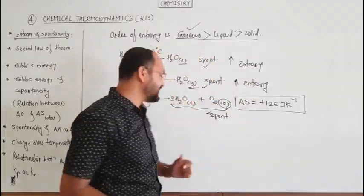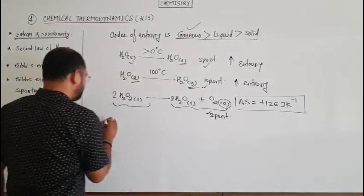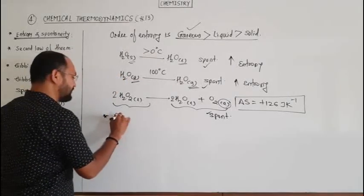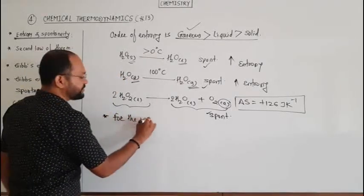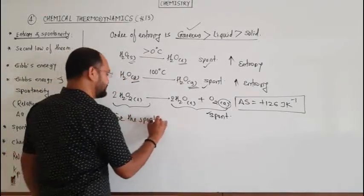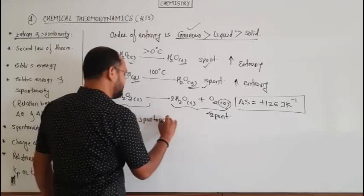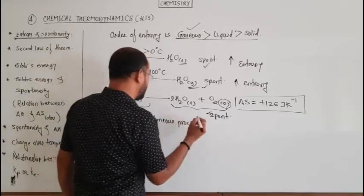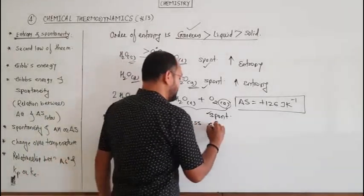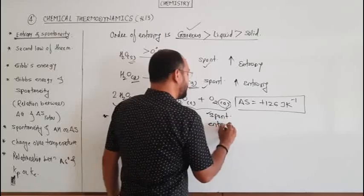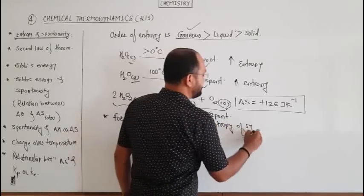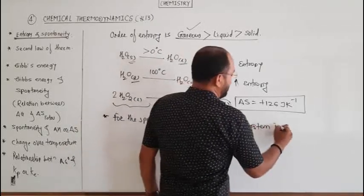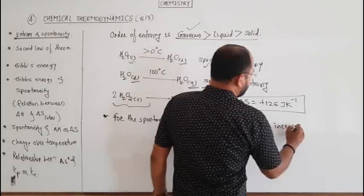In all these three spontaneous processes, the entropy of the system gets increased. So we can say that for the spontaneous process, entropy of the system increases.